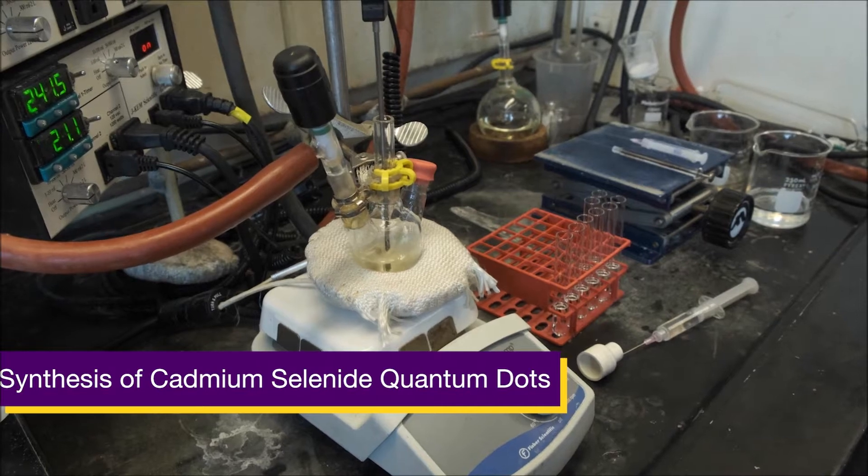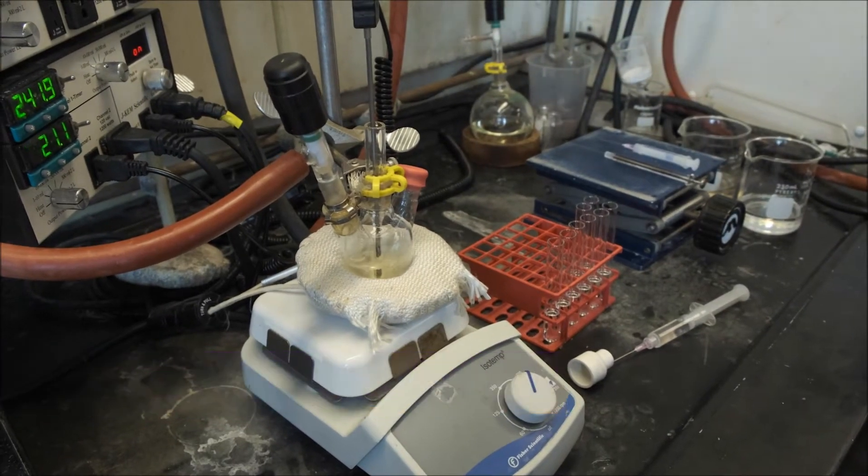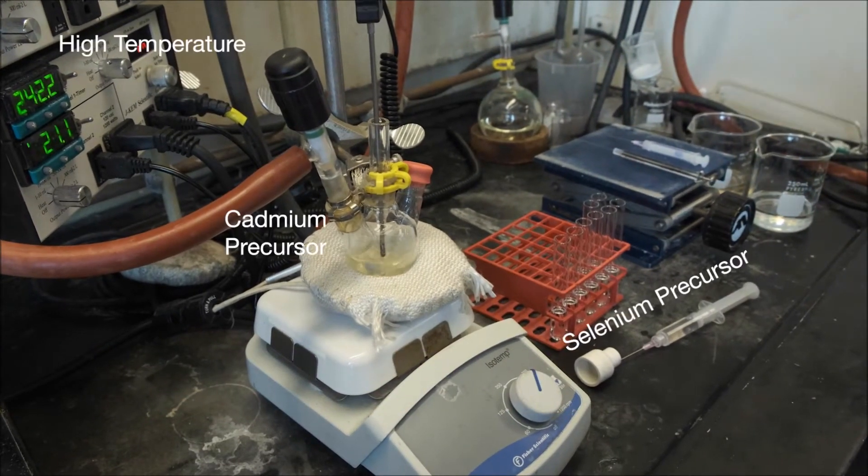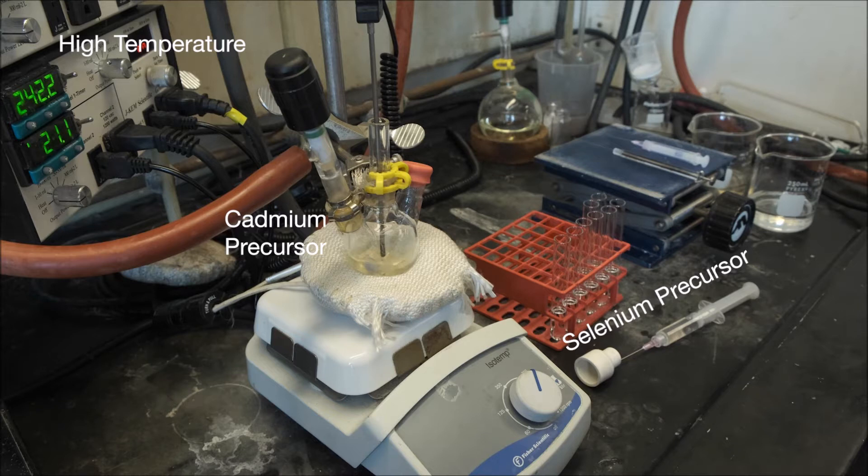Here we have a standard setup for the synthesis of cadmium selenide quantum dots. The key components are the cadmium precursor dissolved in solvent in the flask and the selenium precursor in the syringe. We're operating at a high temperature of about 240 degrees Celsius.